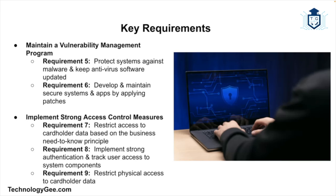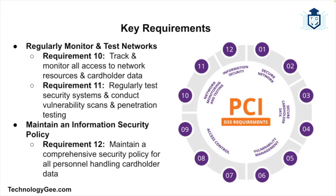The next control objective is maintaining a vulnerability management program. Requirement five is to protect all systems against malware and regularly update antivirus software. Requirement six is to develop and maintain secure systems and applications. Under implementing strong access control measures, requirement seven states you need to restrict access to cardholder data by business need-to-know. Requirement eight is to identify and authenticate access to system components, and requirement nine is to restrict physical access to cardholder data.